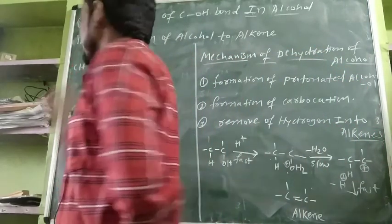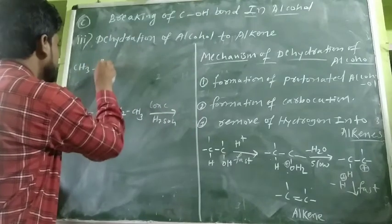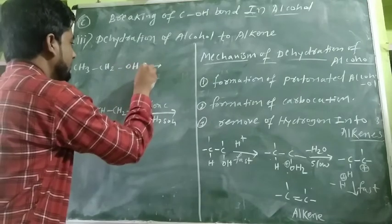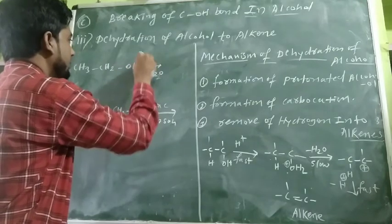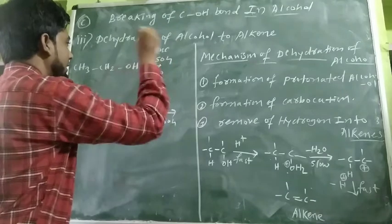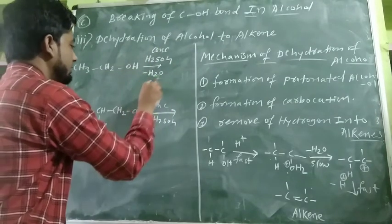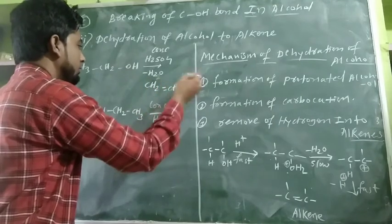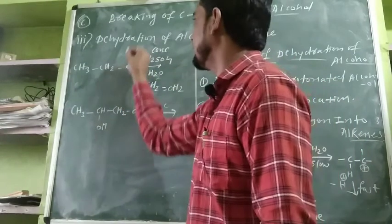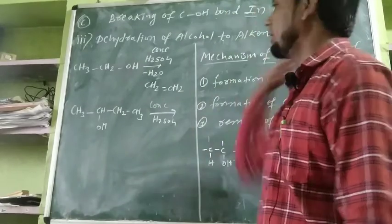We take the same example as yesterday. We have CH3-CH2-CH2-OH. This primary alcohol loses a water molecule in the presence of concentrated H2SO4. Concentrated H2SO4 acts as the dehydrating agent. What we get is CH2=CH2, an alkene, along with the loss of a water molecule. This means the OH group is removed — this is the breaking of the C-OH bond.